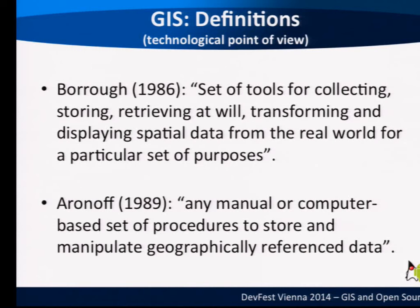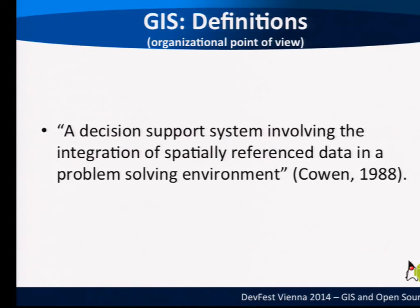I want to stress the fact that GIS doesn't have to be computer-based. From an organizational point of view — and this is what makes GIS very useful and why it's gaining more momentum, especially in recent years thanks to technology — it is a decision support system involving integration of spatially referenced data in a problem-solving environment. This definition, given by Cohen in 1988, means it is a system that helps us take well-informed decisions.